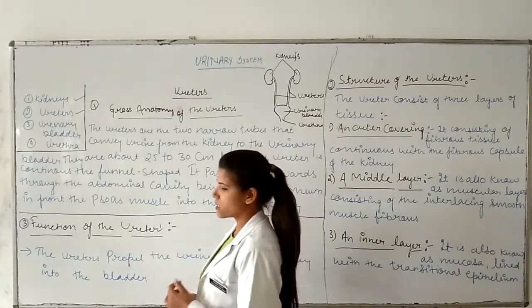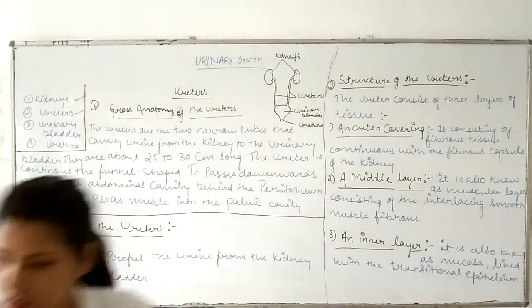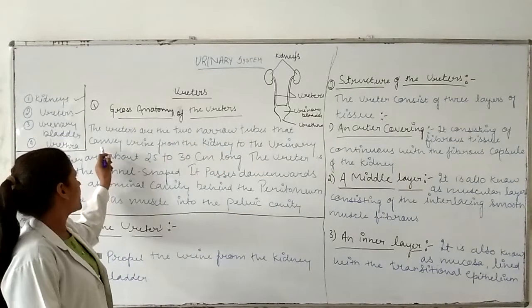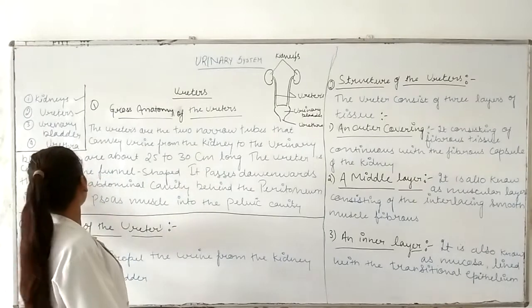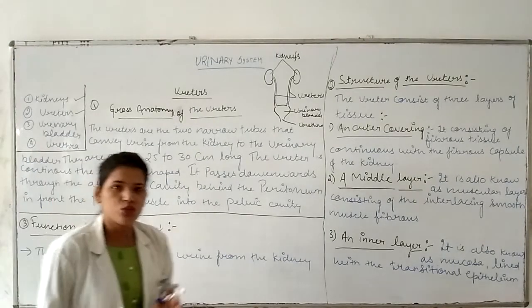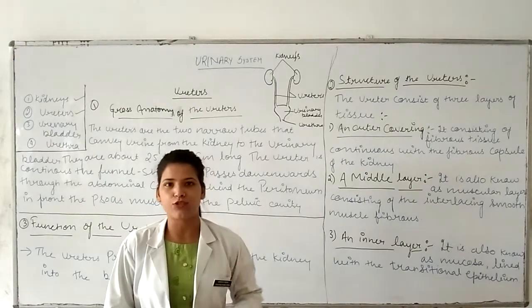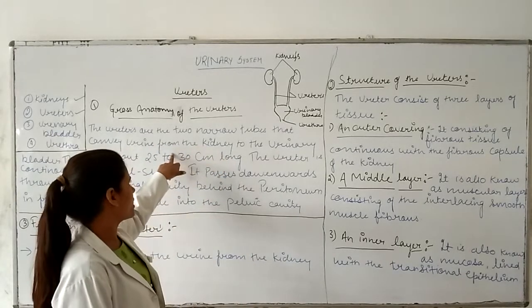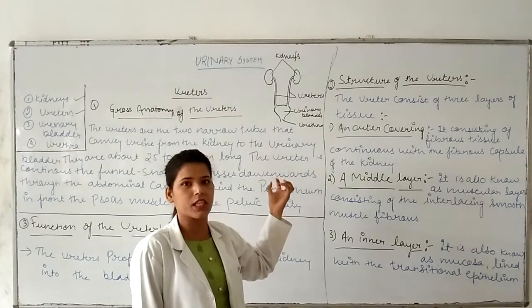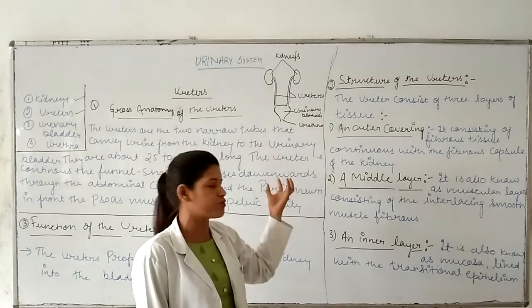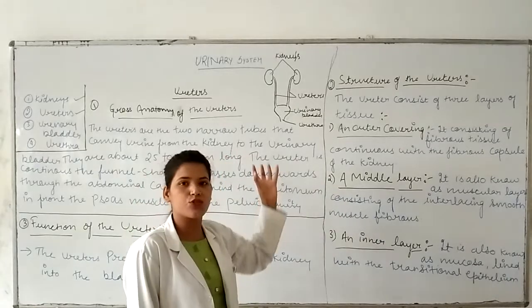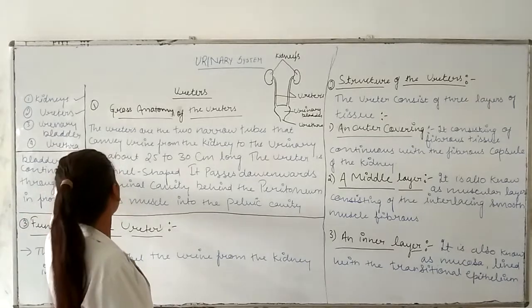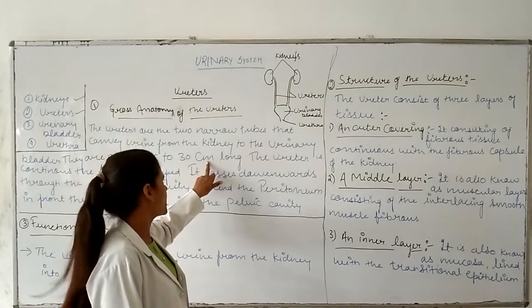The urinary ureters are two narrow tubes that run from the kidney. The ureters are two narrow tubes that collect urine from the kidney. The urinary ureters are approximately 17 to 30 centimeters long.